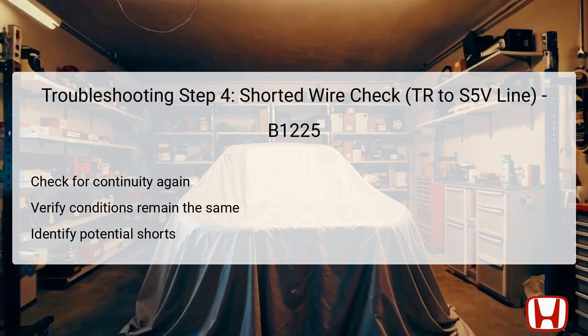During troubleshooting step four, the technician checks for a shorted wire between the TR line and the S5V line. Maintain the ignition in the lock/zero position and keep the connectors securely disconnected. Continuity must be measured between test point one — the climate control unit 32P connector, pin 23, light blue — and test point two — the climate control unit 32P connector, pin 24, black. If continuity exists, this indicates there is a short that needs repair between the wires connected to the climate control unit and the in-car temperature sensor.